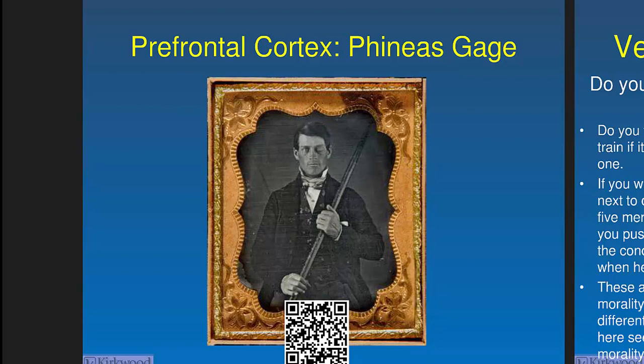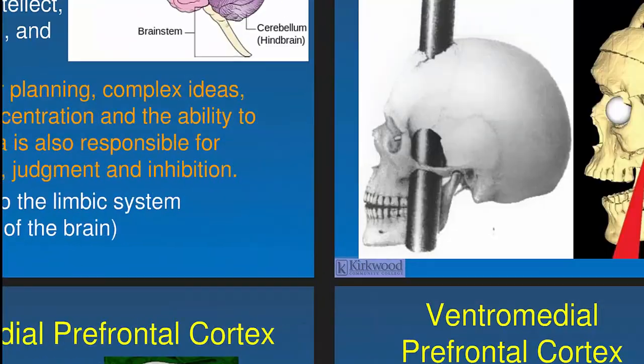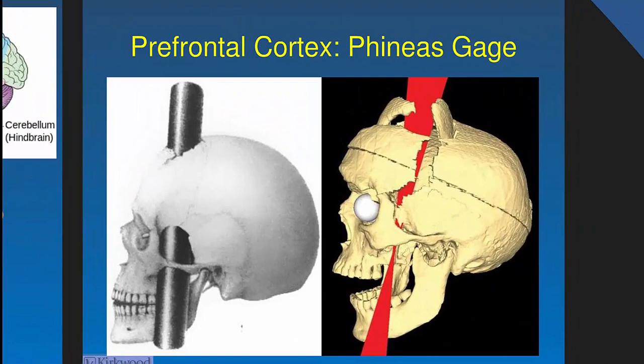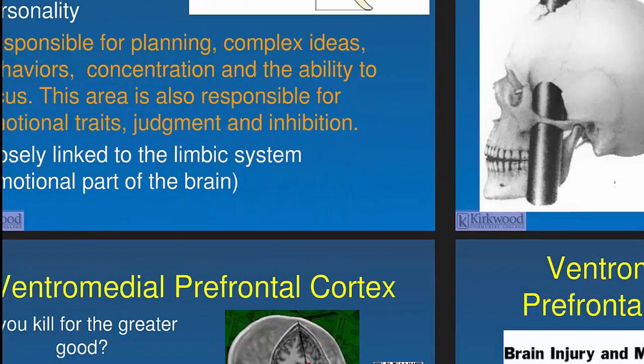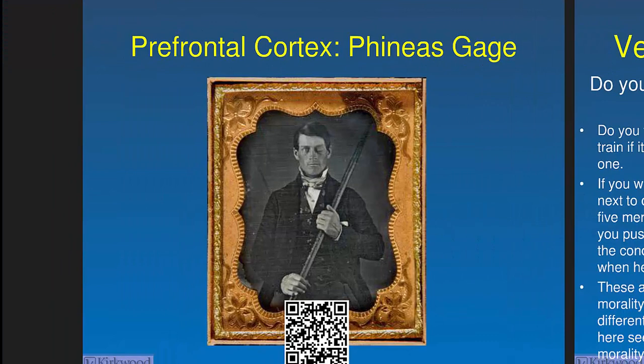The classic prefrontal cortex study is Phineas Gage — a railroad worker who was tamping dynamite when a spark caused an explosion, driving a metal rod through his head. By all accounts a pleasant, gentlemanly person beforehand, his personality drastically changed afterwards — he became difficult and showed poor judgment. This demonstrated that the frontal lobe is involved in personality, empathy, and social conduct.